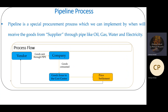Pipeline is a special procurement process which we can implement when we receive goods from a supplier through a pipe, like oil, gas, water, and electricity.